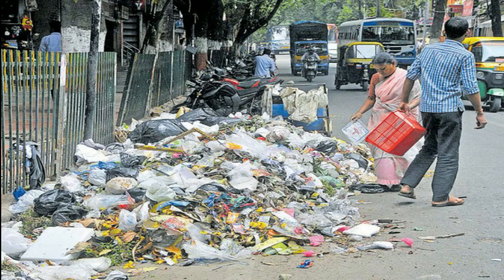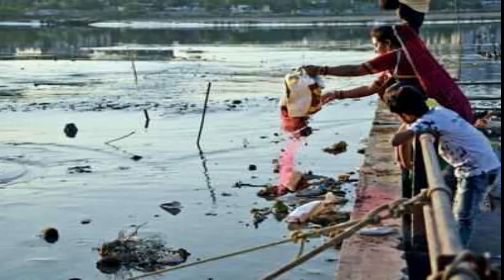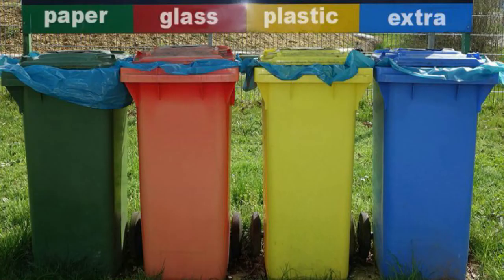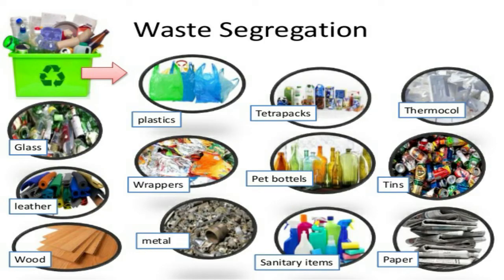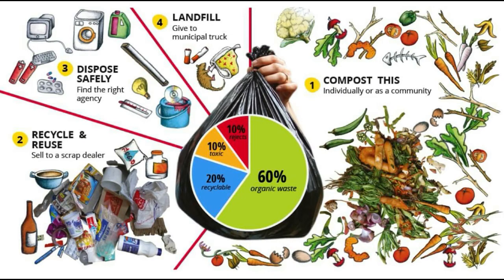Dispose of your garbage properly. Scattering it on the ground and throwing it into any body of water will contribute to air and water pollution. Do not throw trash into bodies of water. Your garbage should be segregated as biodegradable and non-biodegradable. Biodegradable is garbage that decays, like chicken bones, some clothes, and fruit peelings. Non-biodegradable is garbage that does not decay, like plastic, glass, and synthetic rubber. Biodegradable garbage can be put in compost pits to make natural fertilizer. Non-biodegradable garbage may be reused or recycled.